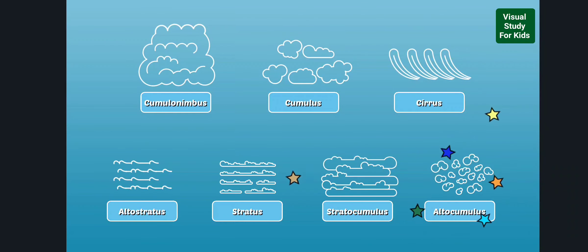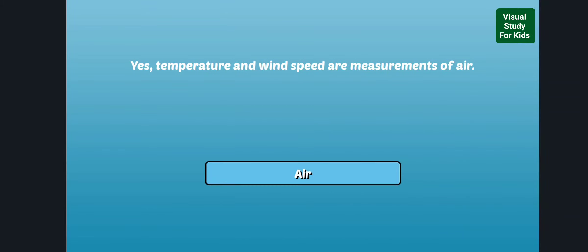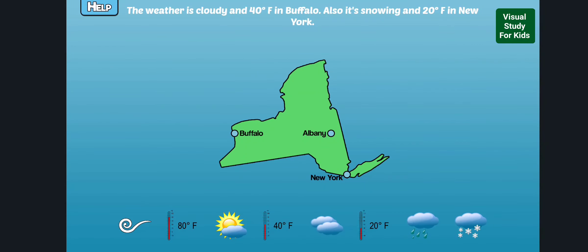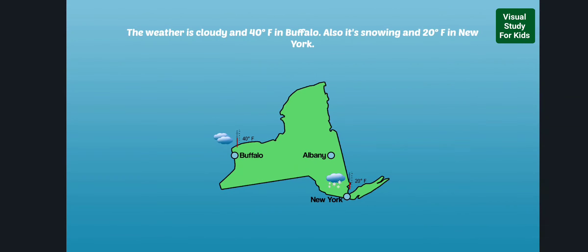Altocumulus are middle-level clouds that are small, white, and puffy. Good job! Read the weather report and drag the symbols to the correct place on the map. Well done! Great job!